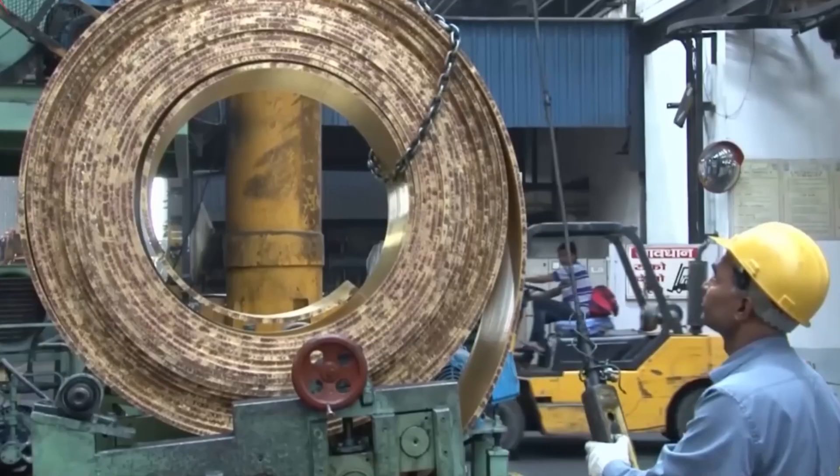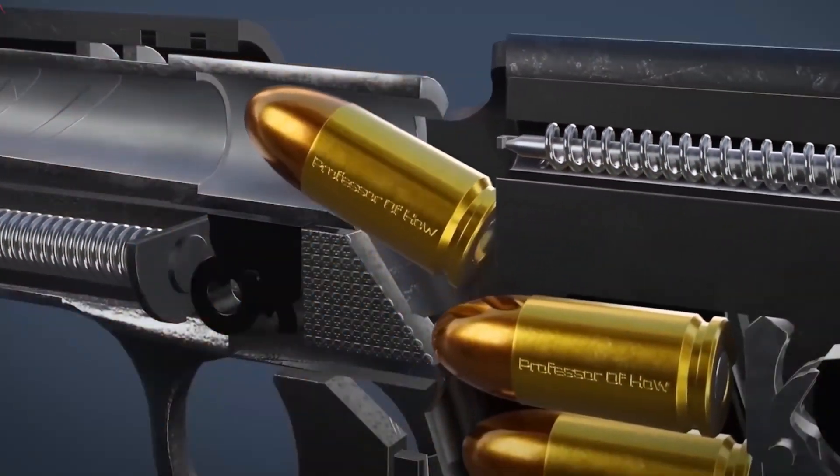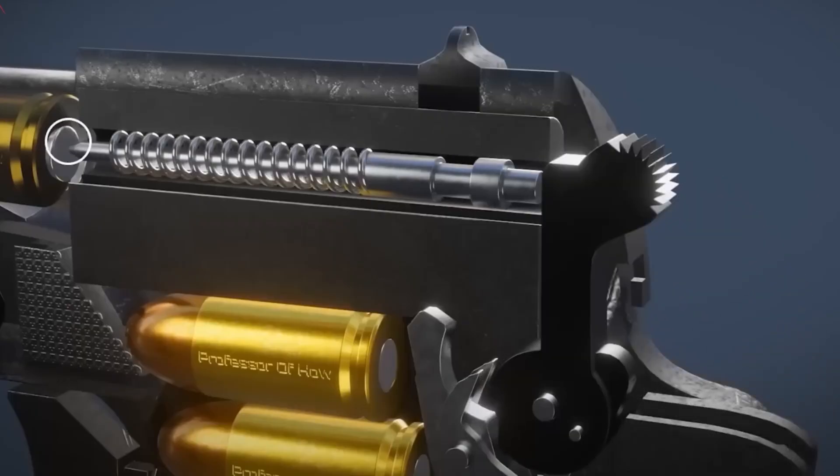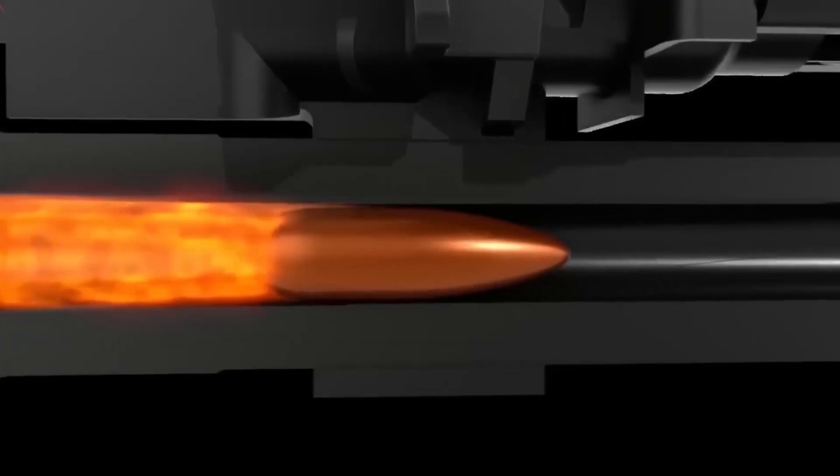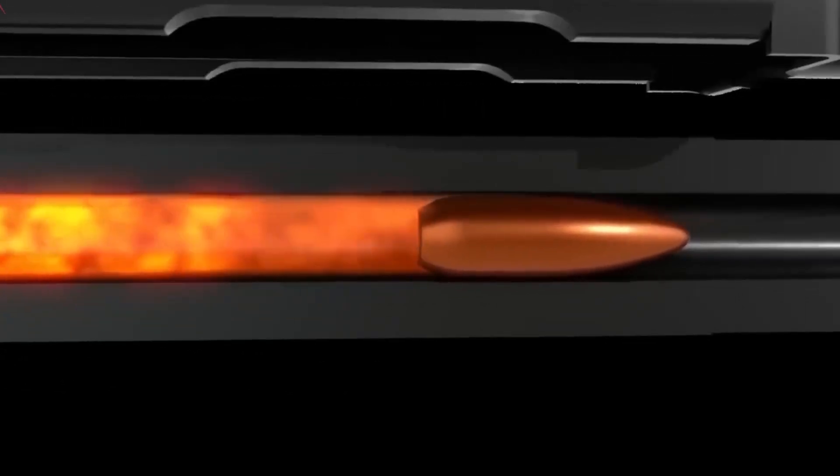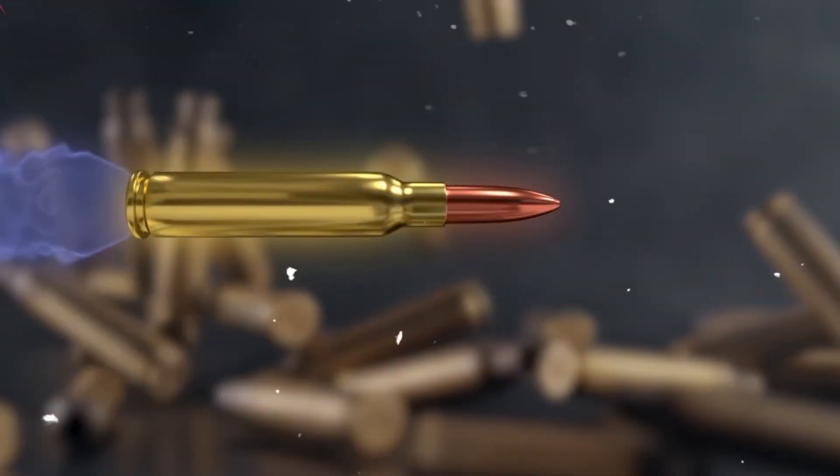The modern bullet combines centuries of metallurgical knowledge with cutting-edge automation to create something remarkable, a product that must function perfectly the first time, every time, often at supersonic speeds. Let's explore how these essential components go from raw materials to finished ammunition ready for the range.